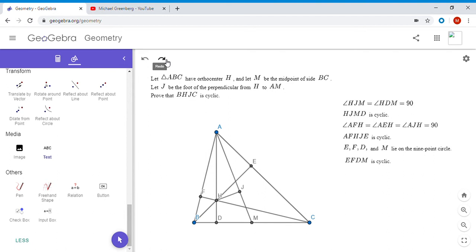But what do we do with all these cyclic quadrilaterals? When you have three cyclic quadrilaterals, I try to use the radical axis theorem. That says that given any three circles, the pairwise radical axes concur at a point. For example, if you consider the circle going around A, F, H, J, E and you also consider the circle going around D, H, J, and M, then the radical axis is the line connecting the two intersection points, so it would be line HJ.